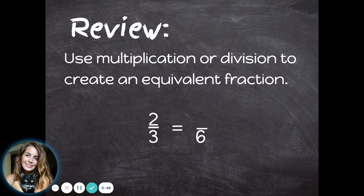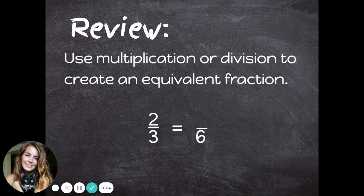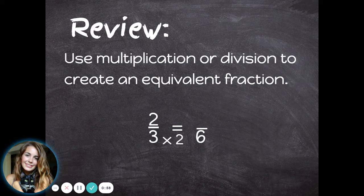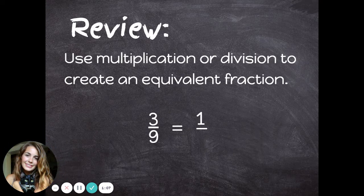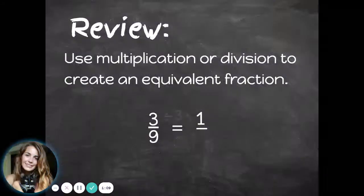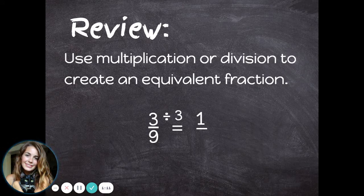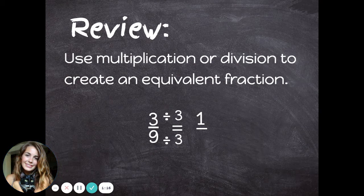Let's try using multiplication or division to create equivalent fractions. Here we're changing two-thirds into sixths. The three was multiplied by two to get to six, so we have to do the same to the numerator. Two-thirds is equivalent to four-sixths. This time, the three was divided by three to get a one as the new numerator, so let's do the same to the denominator. Three-ninths is equivalent to one-third.